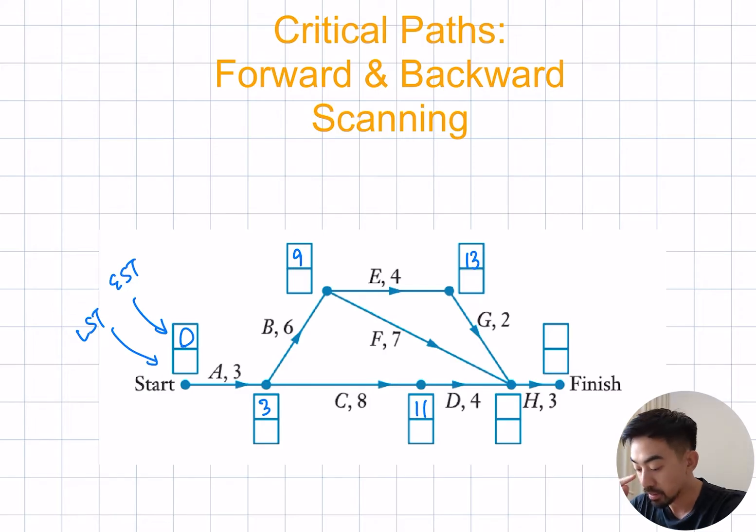Now here I need to make a decision because I have three edges which connect to my next early start time box. The first one is 13 plus 2 which is 15. The second is 9 plus 6 which is 16. And lastly 11 plus 4 is 15. We want to choose the biggest number. So that's 9 plus 7 which is 16. And then lastly 16 plus 3 is 19. So our forward scan is done.